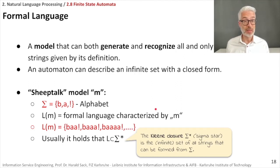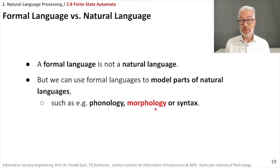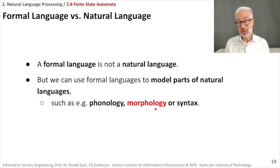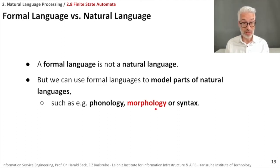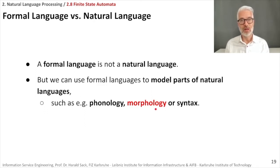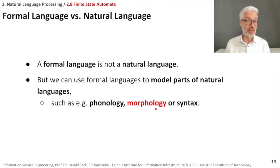Of course a formal language is not a natural language, so we are not able to model natural language fully with it. However, parts of natural language can be modeled, and what we can model with a finite state automaton are parts of phonology, morphology, or syntax. Syntactic rules can be excellently modeled with regular languages. We will look more closely at morphology, because morphological parsing and morphological analysis can be performed based on finite state automata.